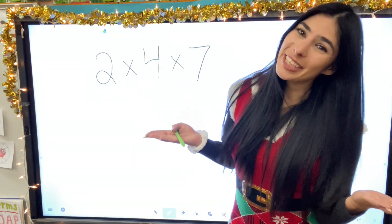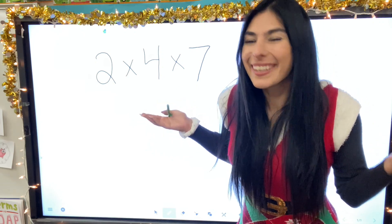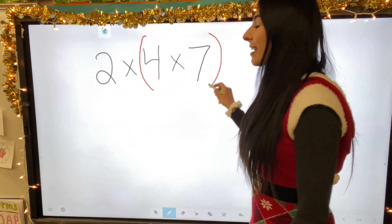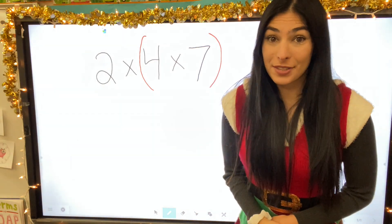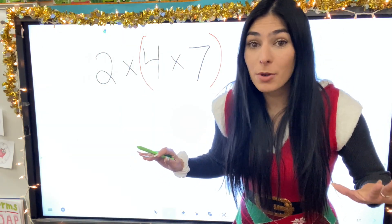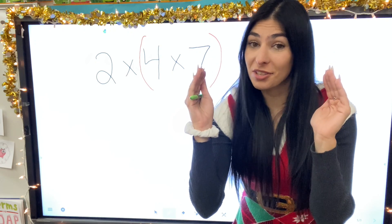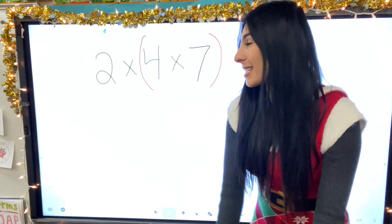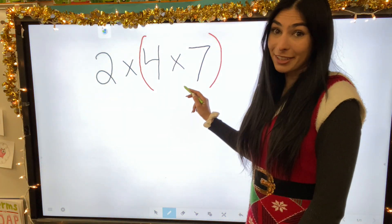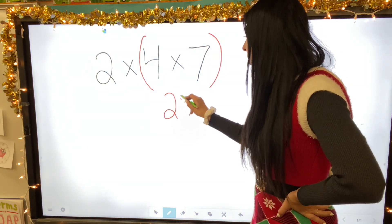Let's do another one. New problem — who should hang out first? Doesn't matter. Let's go ahead and have four times seven hang out first. Remember, parentheses go first. Let's solve: four times seven equals twenty-eight.